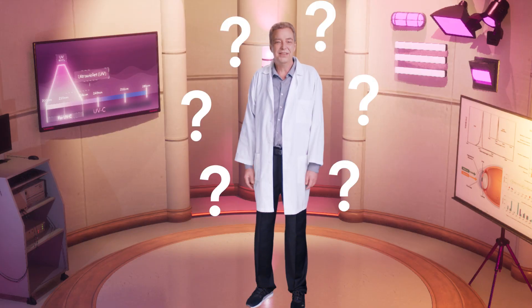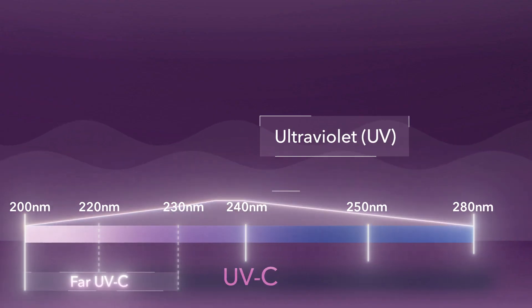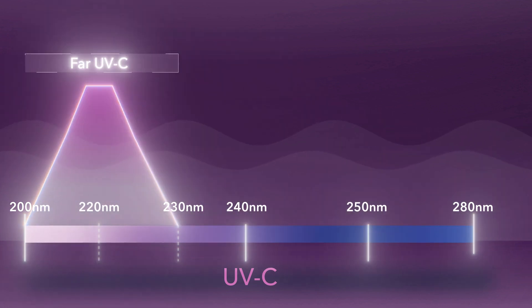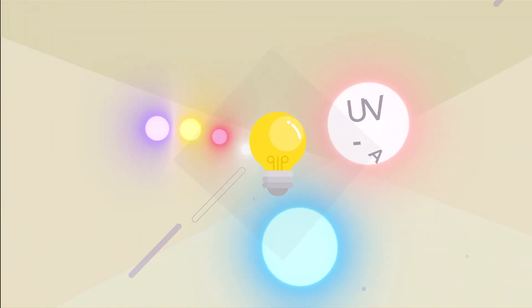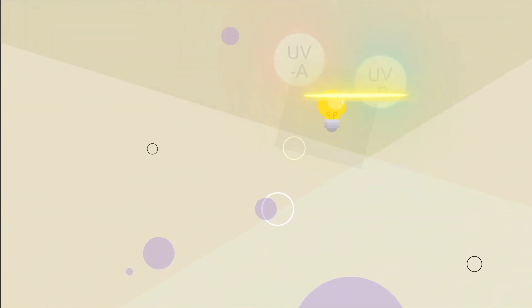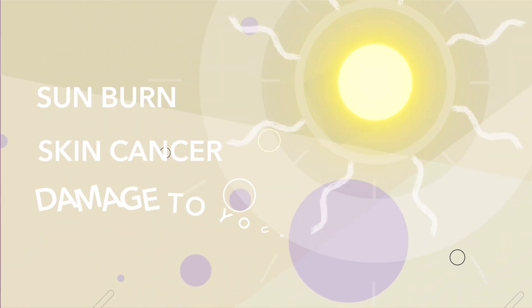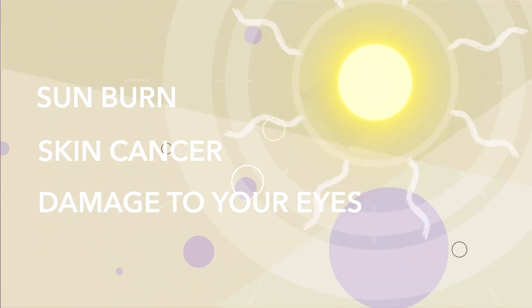So what is UV light? In simple terms, there are shorter wavelengths of light that we cannot see. The two UV light types most people are familiar with are UVA and UVB, which are part of sunlight and can cause sunburns, skin cancer, and damage to your eyes.